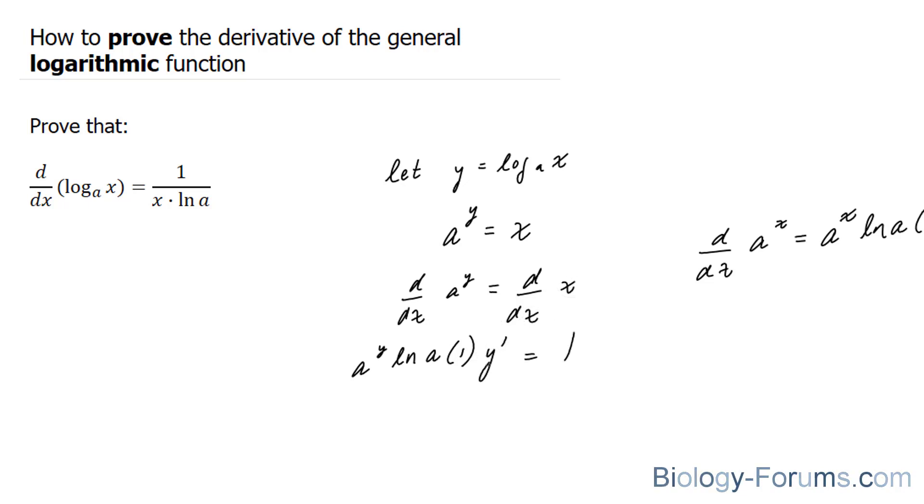Next, I'll isolate y' by dividing both sides by a to the power of y times ln a. Now remember, a to the power of y equals x. Therefore, y' equals 1 over x ln a. This is how this is derived.